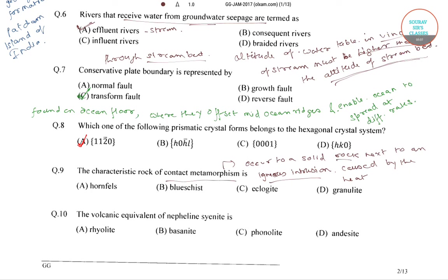When rocks in contact with igneous intrusions are altered, they frequently become more indurated and more coarsely crystalline. The many altered rocks of this type are called hornfels. So the correct answer is hornfels — the characteristic rock of contact metamorphism is hornfels.